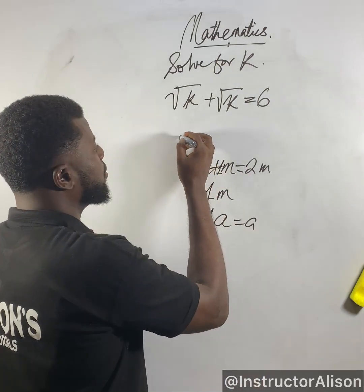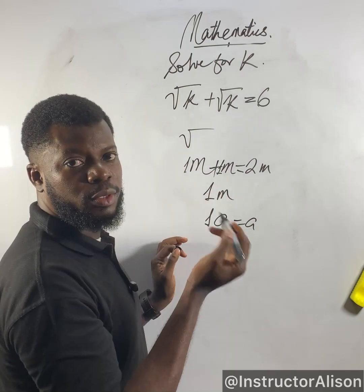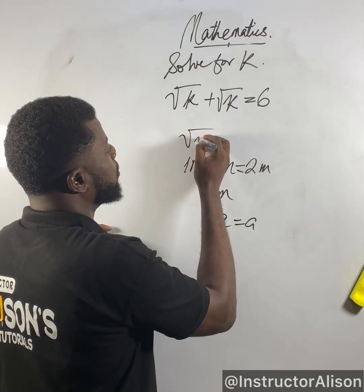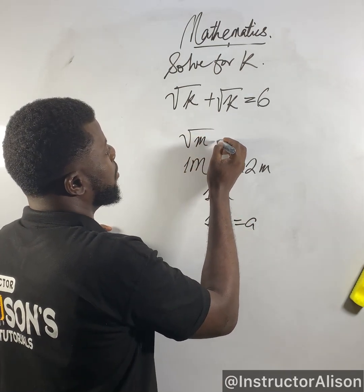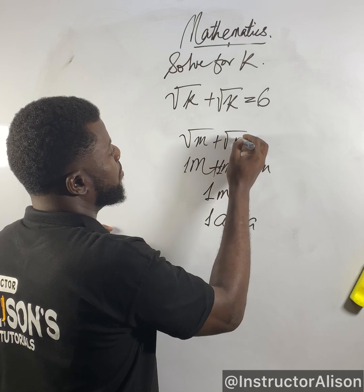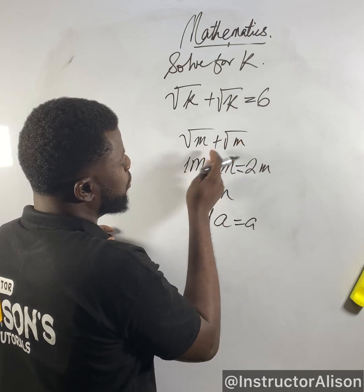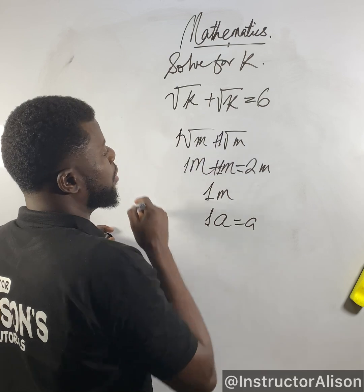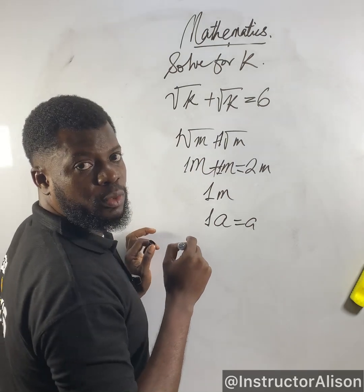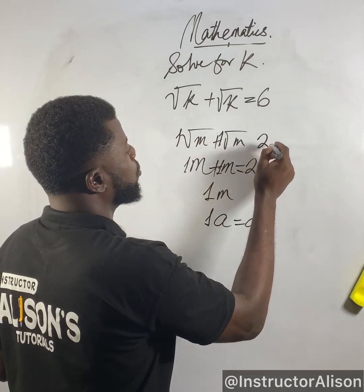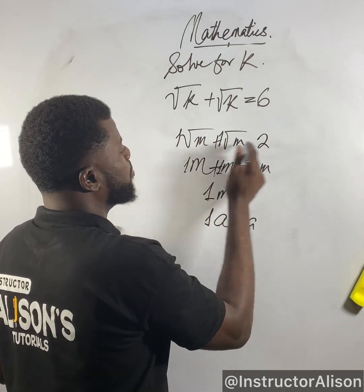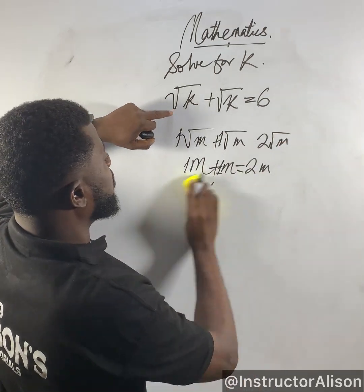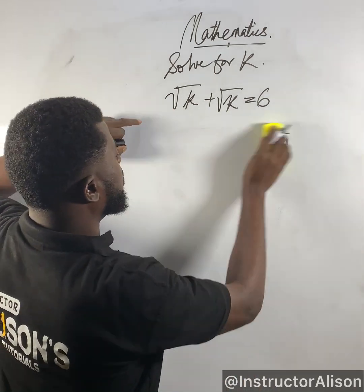It happens when you're having irrational stuff — maybe exotic kinds of terms. Let's say root m plus root m. Because we're having this root m common, we want to add up their coefficients, which is 1. 1 plus 1 will give you 2, then pick one of these root m. That's the system we're going to be applying on this particular problem.